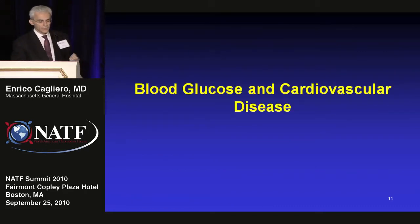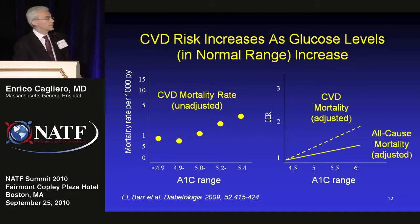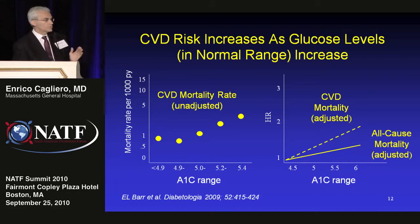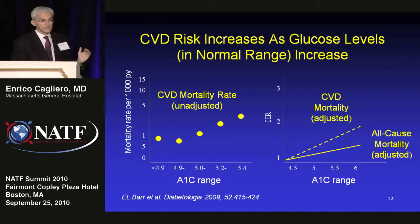What about glucose levels and cardiovascular disease? Interestingly, not just in the diabetic range, but even in the normal range. In a study of normal individuals divided by average glucose levels measured by hemoglobin A1c — from 4.9 to 5.4 — looking at cardiovascular mortality unadjusted, adjusted, and all-cause mortality, the higher the glucose levels, the higher the cardiovascular mortality, even in patients with absolutely normal glucose tolerance.